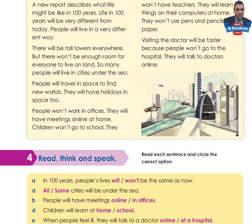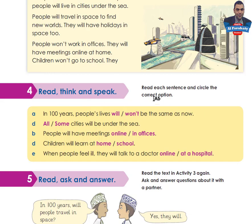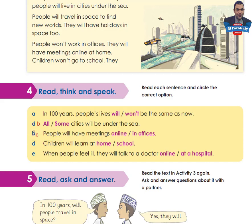Activity 4: read, think, and speak. Read each sentence and circle the correct option. A: 'In 100 years, people's lives will / won't be the same as now.' B: 'All / some cities will be under the sea.' C: 'People will have meetings online / in offices.' D: 'Children will learn at home / at school.' E: 'When people feel ill, they will talk to a doctor online / at a hospital.' Read the text in activity 3 again and circle the correct option. Take your time, then come back to check your answers.